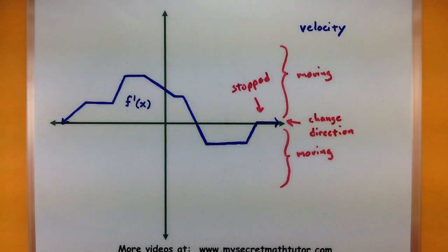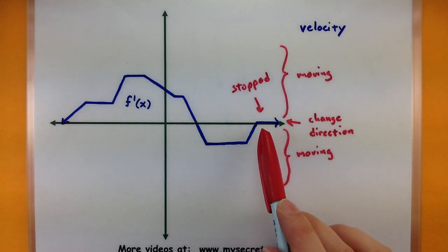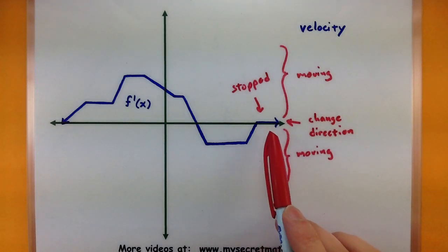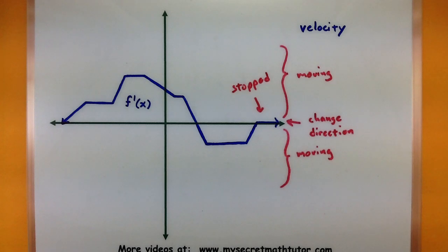And notice how that is completely different from the position function. Where the position function was level, any level spot was where it stopped. But in velocity, only level positions at zero you can interpret as this thing being stopped.